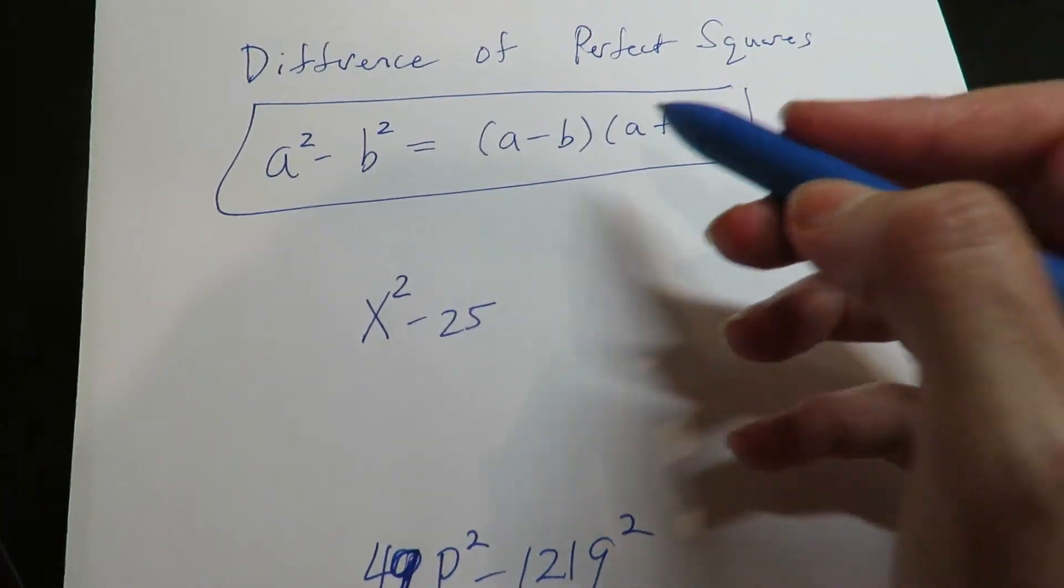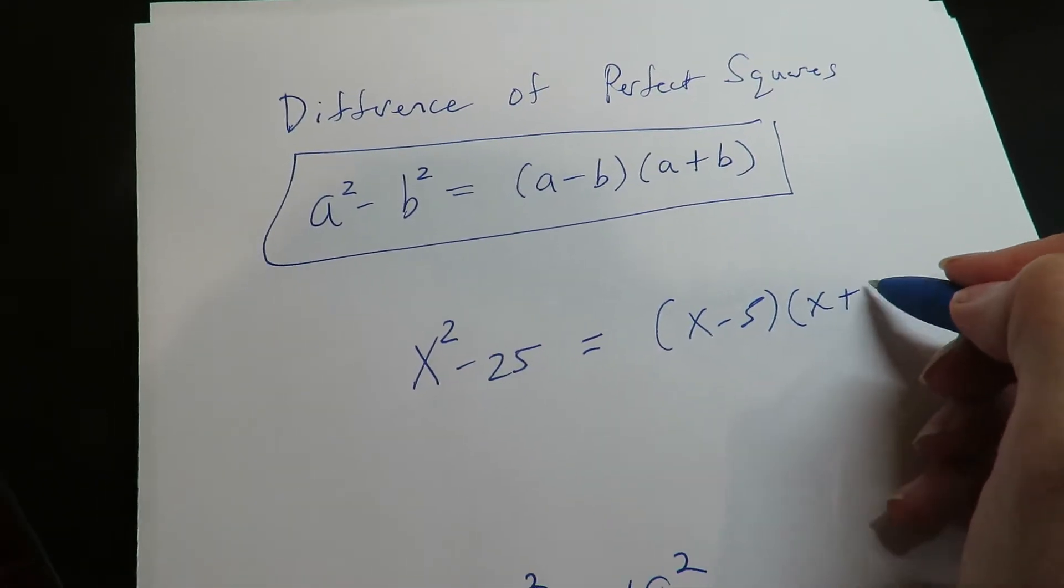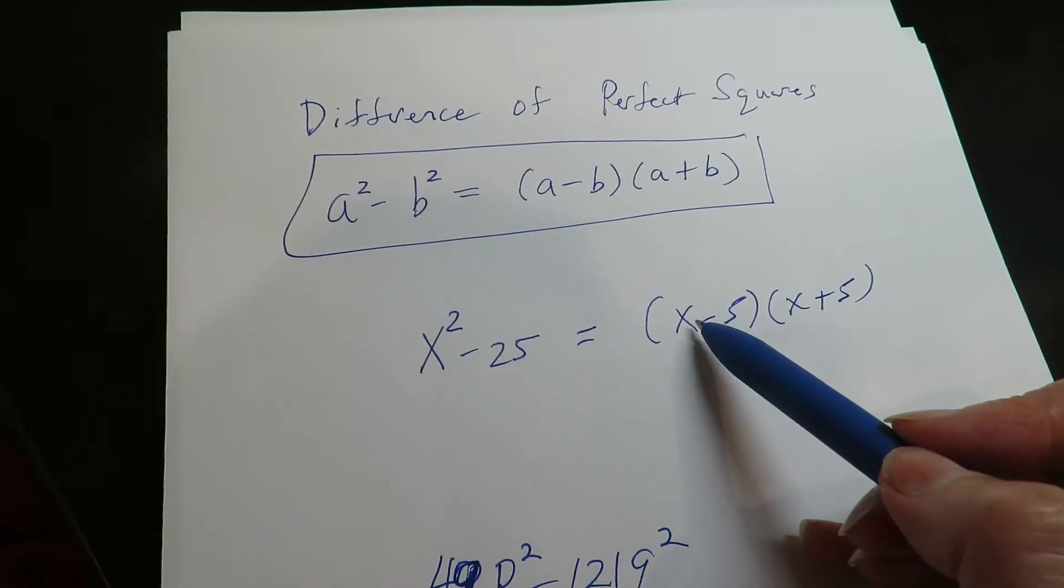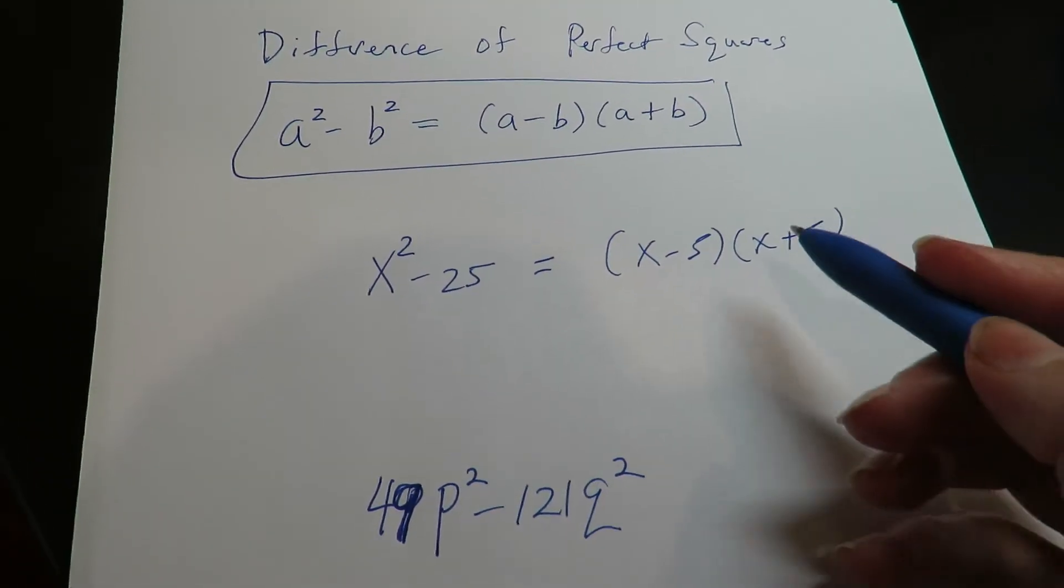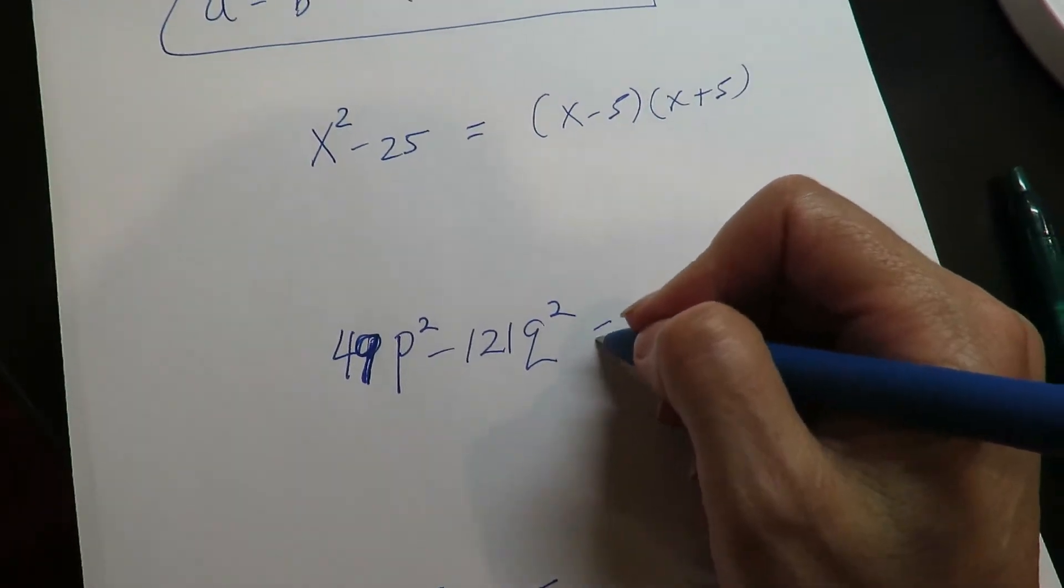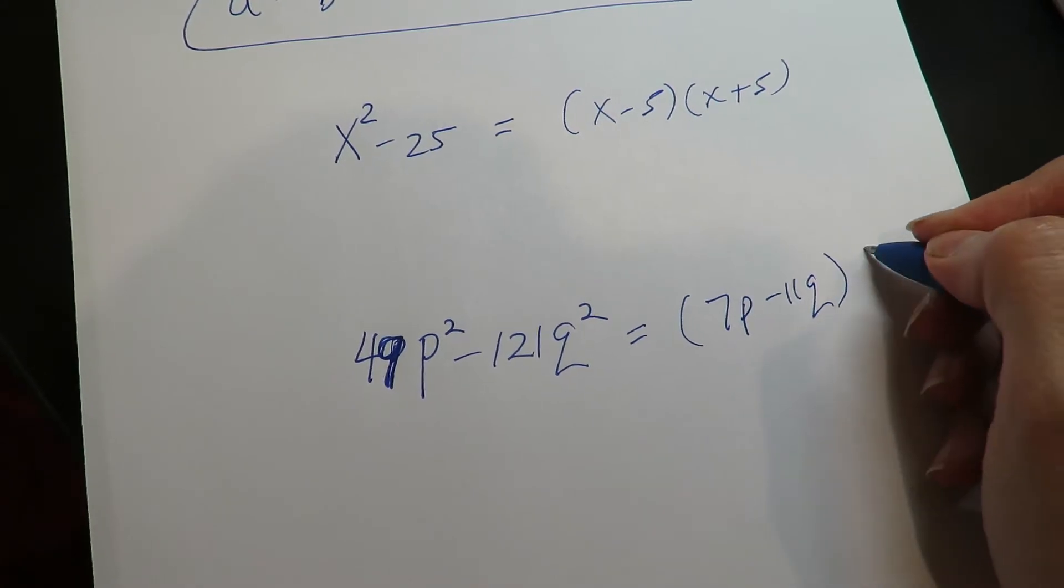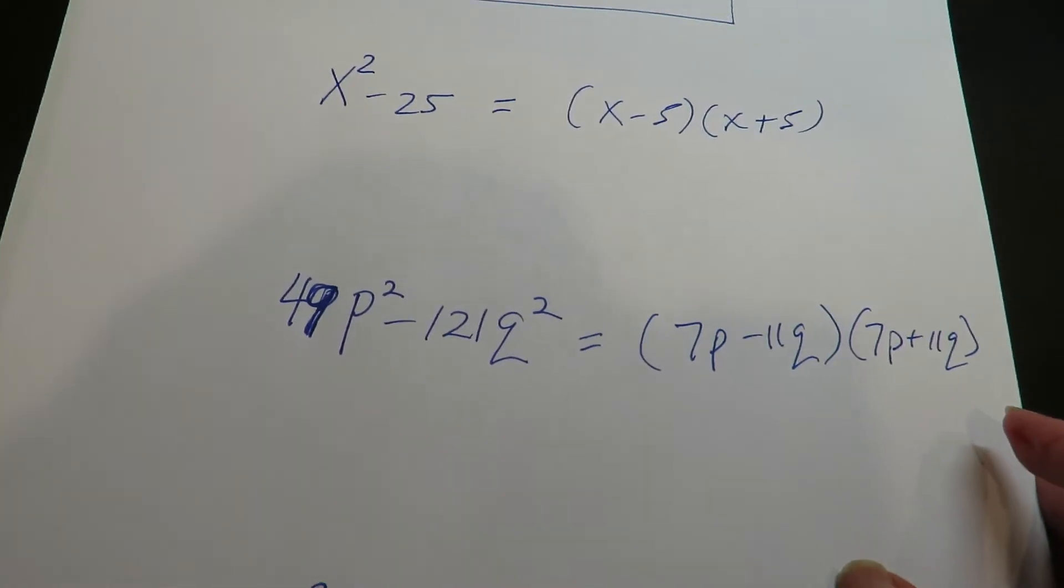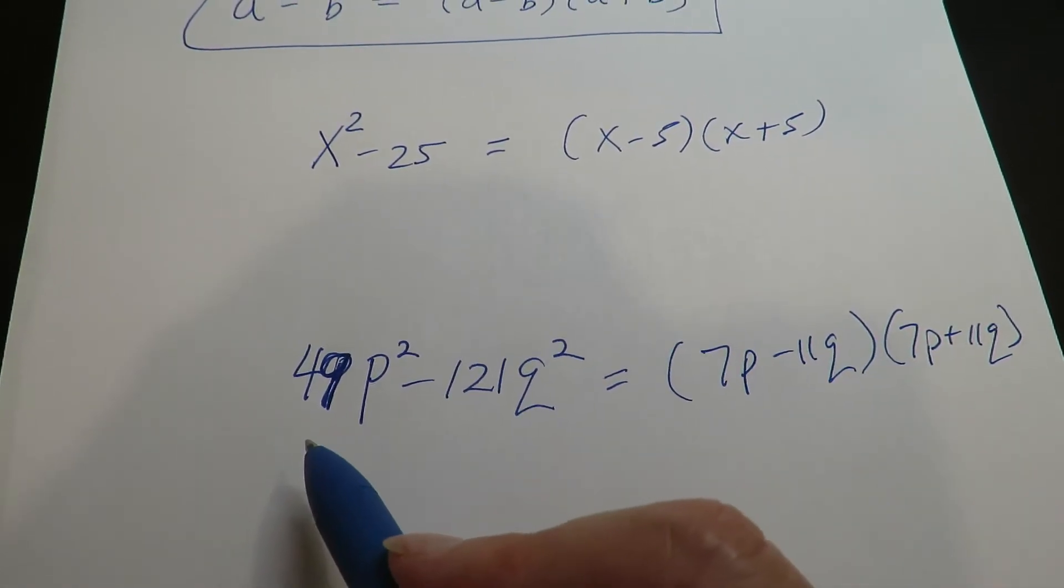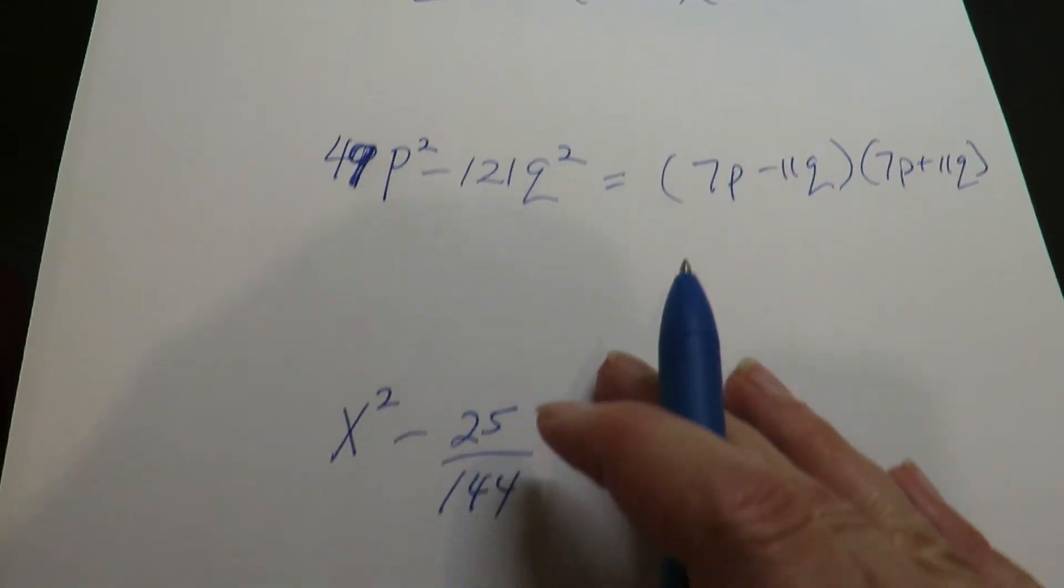This is the difference of perfect squares. So it's sort of the same idea. My brain thinks a lot in square roots when I do these. Square root of this is x. Square root of this is 5. So it's going to look like twins except opposite in the middle. Same thing here. Going to look like twins. I just go with the square root. 7 times 7 makes 49. 11 times 11 makes 121. And just make sure they're opposite sign.